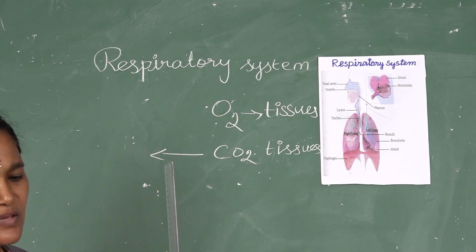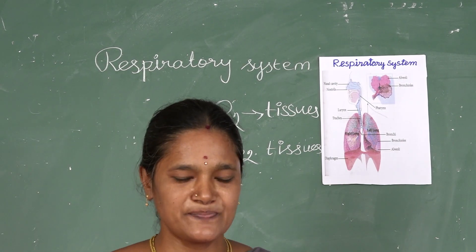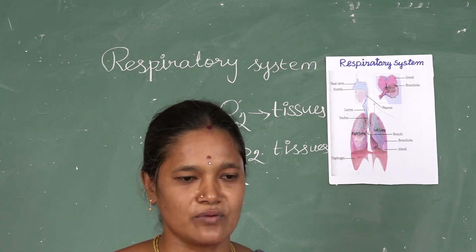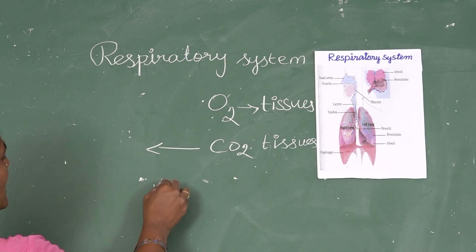There are 3 major parts of the respiratory system: the airway, the lungs, and the muscles of respiration.